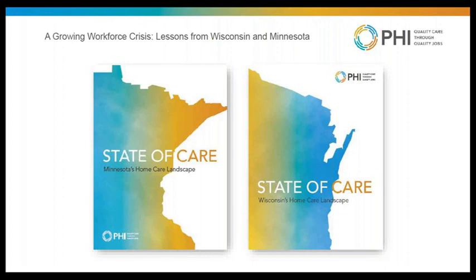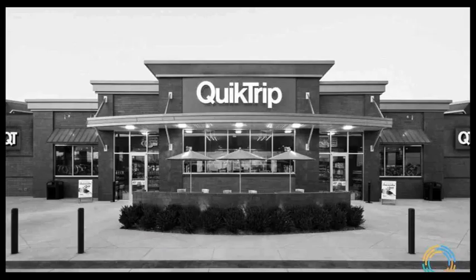PHI recently launched two state initiatives in Wisconsin and Minnesota, which started with wide-ranging studies on the challenges and opportunities in rural home care delivery. For each report, we did a comprehensive review of existing literature on each state's home care system and added our own original analysis. We also visited the states and spoke with diverse stakeholders including consumers, employers, state policymakers, and others. I'll focus on what we learned, and Sue will describe what PHI is doing to address the issues we uncovered.